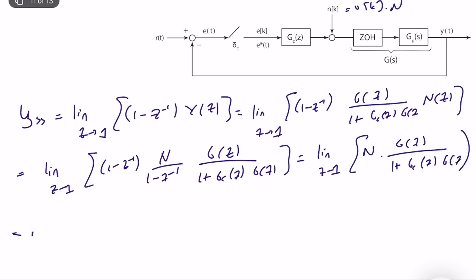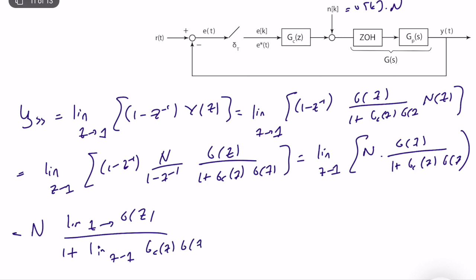Simplifying — since the (1 minus z^{-1}) cancels with the unit step's Z-transform — the steady-state value equals N times the limit as z goes to 1 of g(z) divided by [1 plus gc(z) times g(z)]. So the steady-state error depends on the limit of g(z) and the open-loop transfer function gc(z) times g(z) as z goes to 1. To understand the behavior, we need to look at the type of both the plant and the open-loop transfer function.